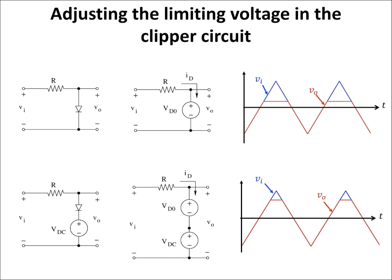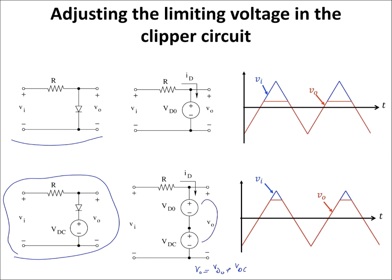It is interesting to note that we can adjust the limiting voltage in the clipper circuit. In the previous example, the output was taken from the two terminals of the diode, so the output voltage was limited to VD0. If we want to change this threshold value, we can add a DC voltage source in series with the diode, as shown in the blue configuration. In this configuration, when the diode is on, Vout = VD0 + VDC. By changing the value of VDC, we can change the threshold value at the output.